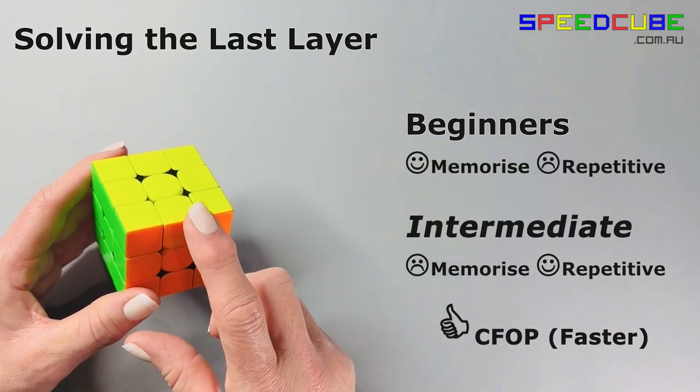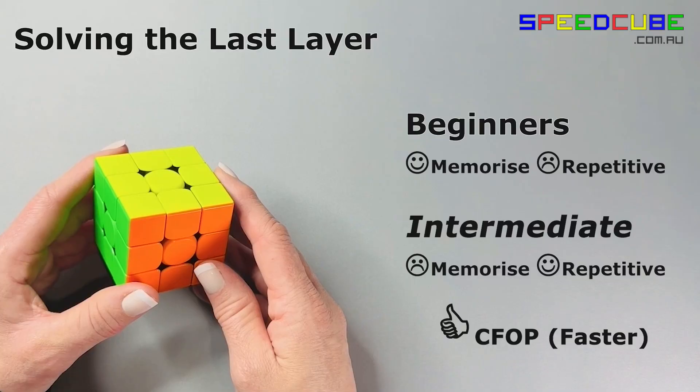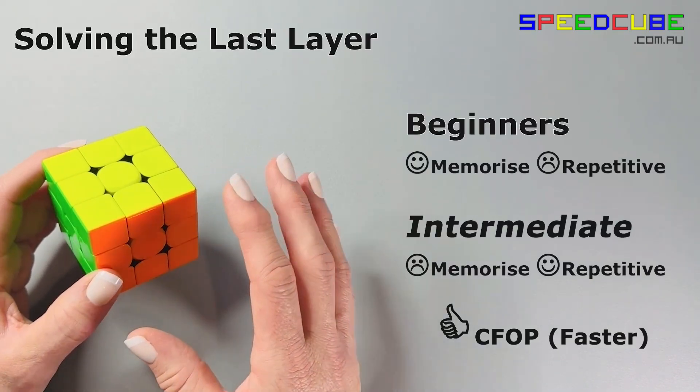So if you want to move into Speed Cubing, then learn the Intermediate Method, because CFOP builds on that.